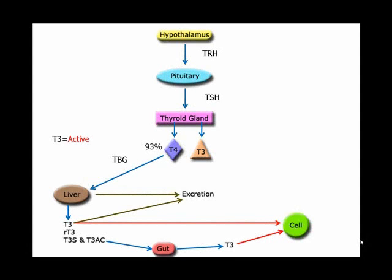So here are the defects. One is you can have a dysfunction in the hypothalamus, which is actually really difficult to measure nowadays and is not run on tests. You can have pituitary dysfunction, which is probably one of the more common types of dysfunction that we see in our practice personally. This means that the pituitary can't tell the thyroid to produce hormone.